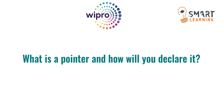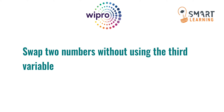The next question is: what is a pointer and how can we declare it? Simply, a pointer is a variable whose value is the address of another variable — it stores a direct address of another memory location. We use the star symbol (*) to declare a pointer.